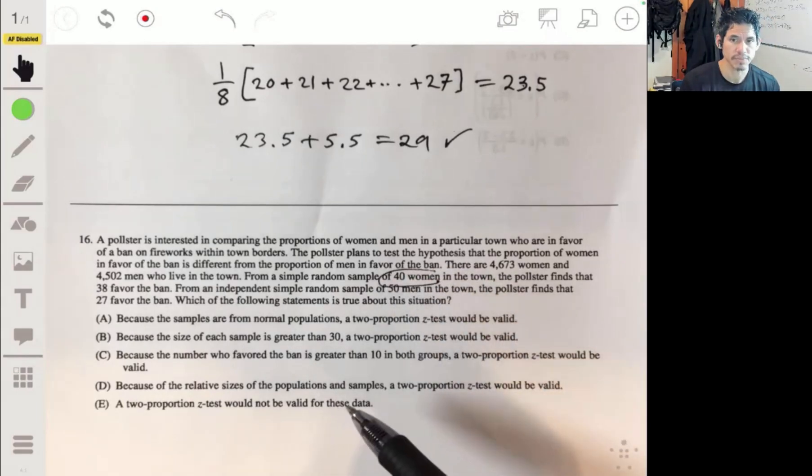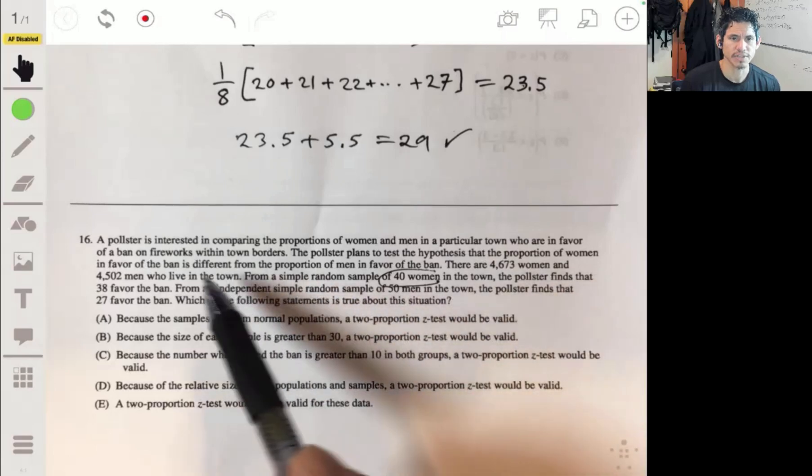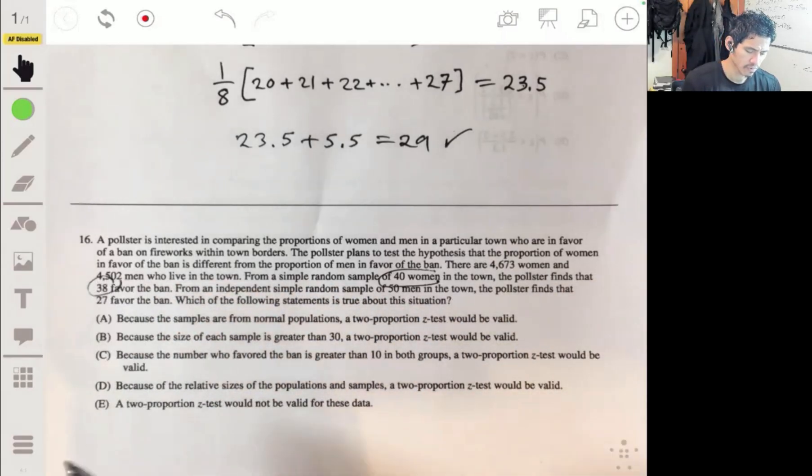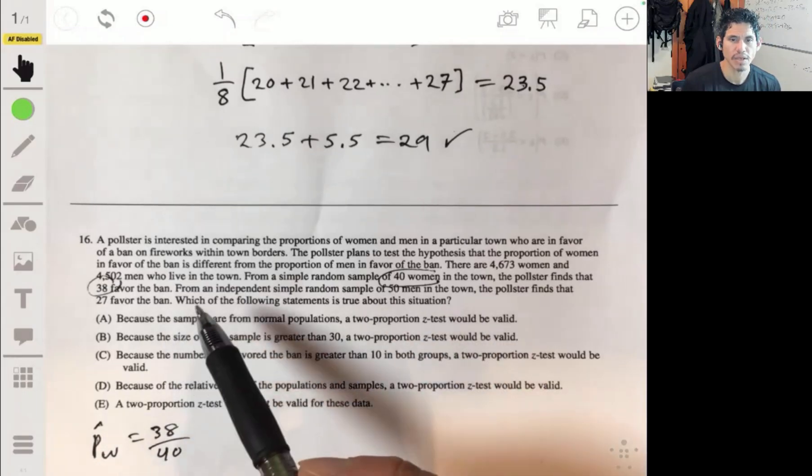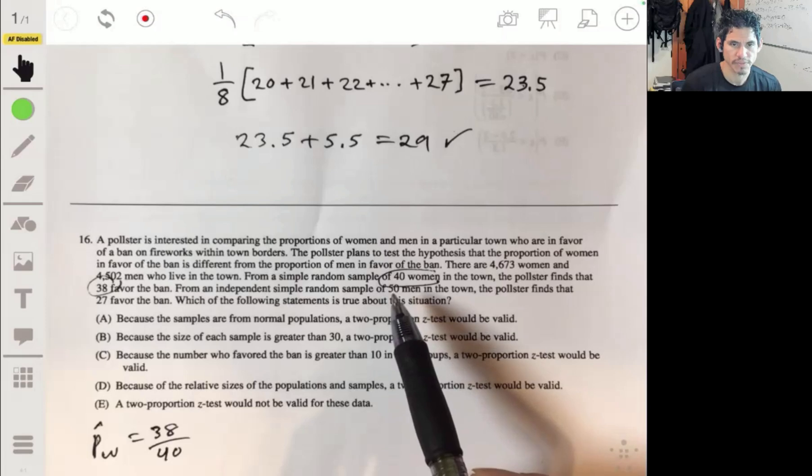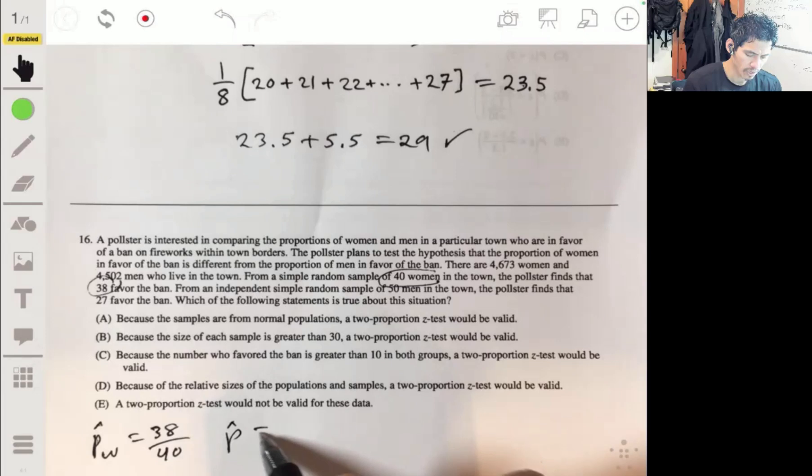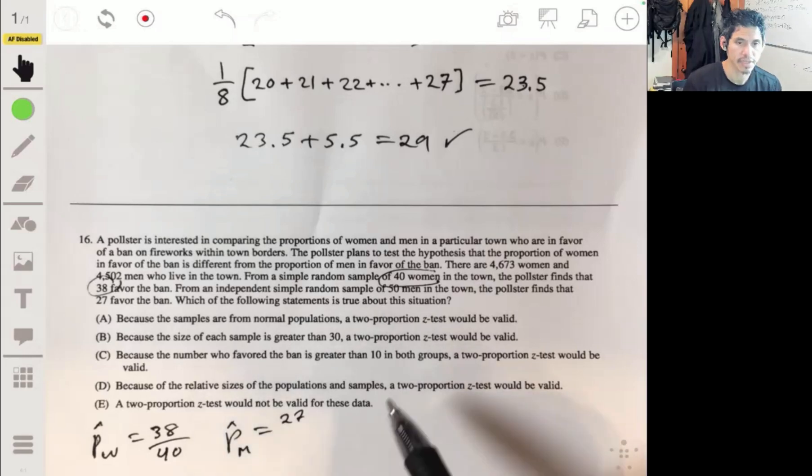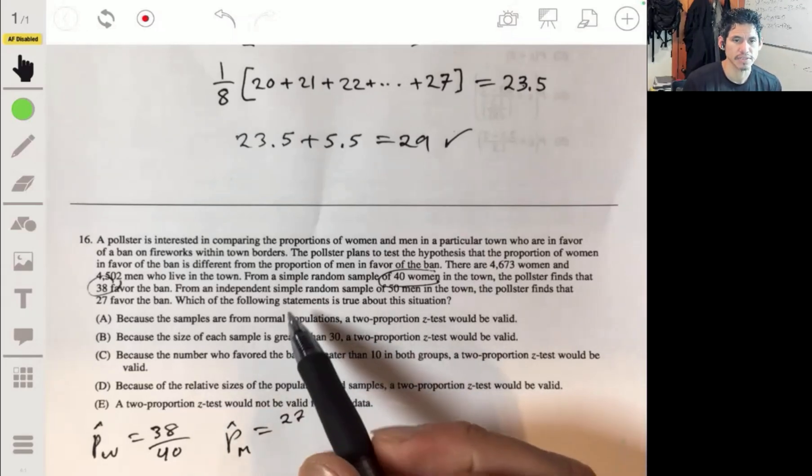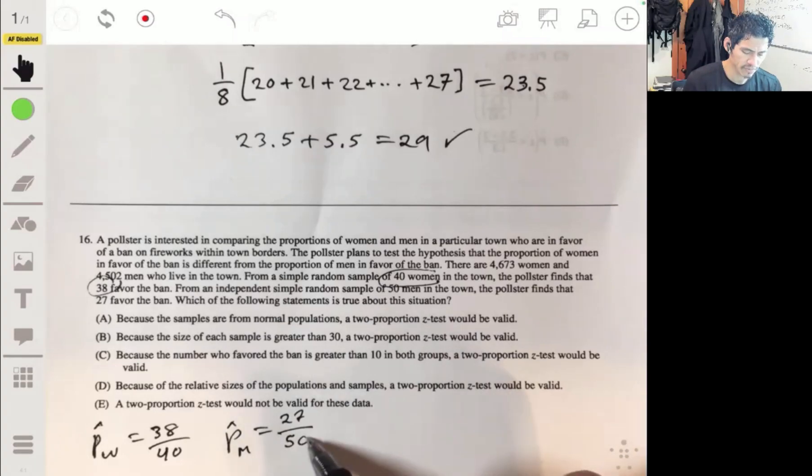From a simple random sample of 40 women in the town, so sample size of 40 women, the pollster finds 38 favor the ban. So let's start for the women: p-hat for women is 38 out of 40. For the men, they have 50 men that they select in the sample and 27 of them are in favor of the ban. So the proportion of men in the sample that are in favor of the ban is 27 out of 50.